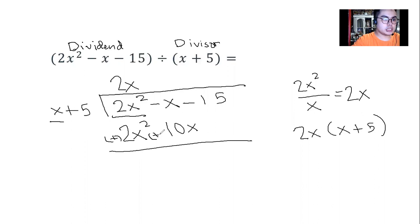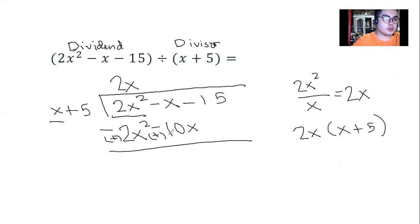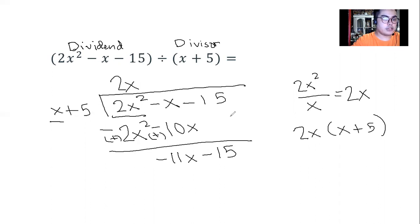We change the signs: 2x squared minus 2x squared cancels out. Then we simplify: negative x minus 10x equals negative 11x. We then bring down the next term of the dividend to continue.